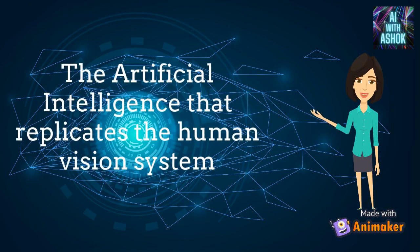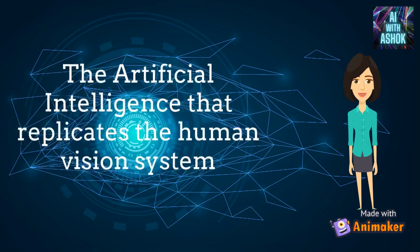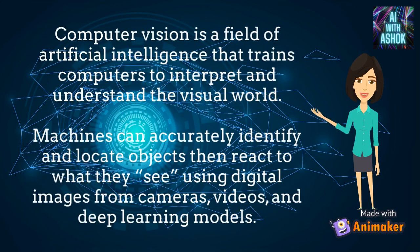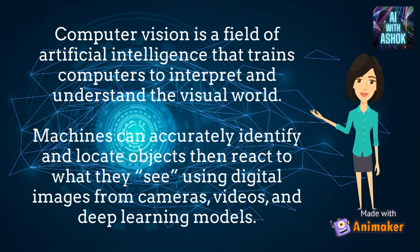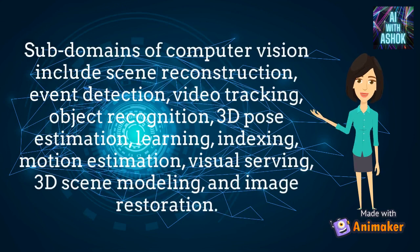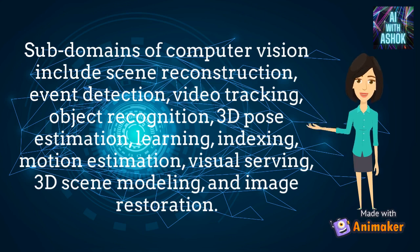The artificial intelligence that replicates the human vision system is called computer vision. Computer vision is a field of AI that trains computers to interpret and understand the visual world. Using digital images from cameras, videos, and deep learning models, machines can accurately identify and locate objects and react to what they see. Subdomains of computer vision include scene reconstruction, event detection, video tracking, object recognition, 3D pose estimation, motion estimation, and image restoration.